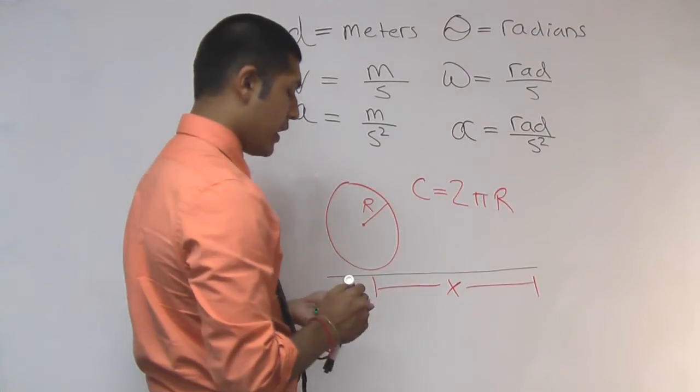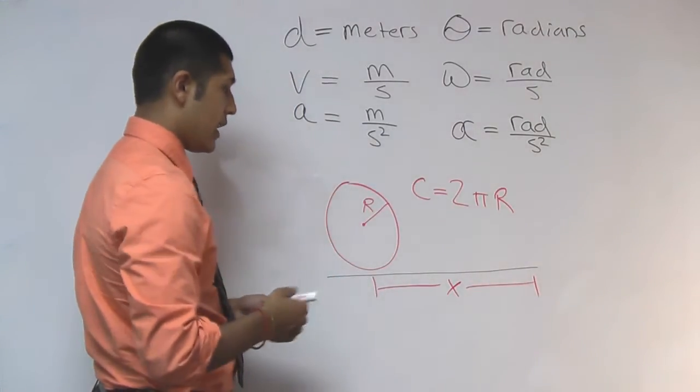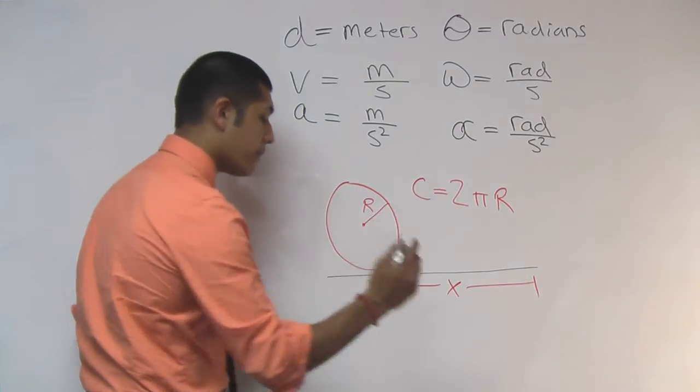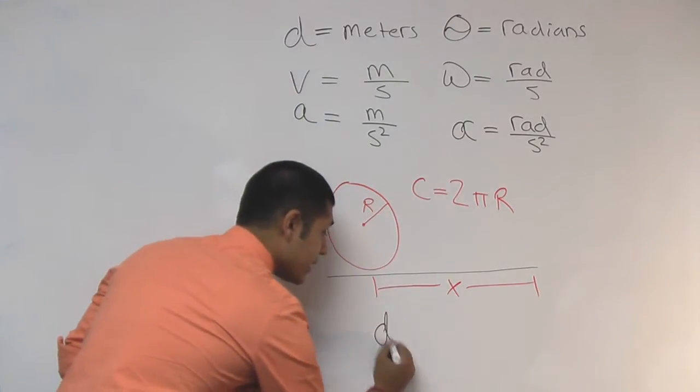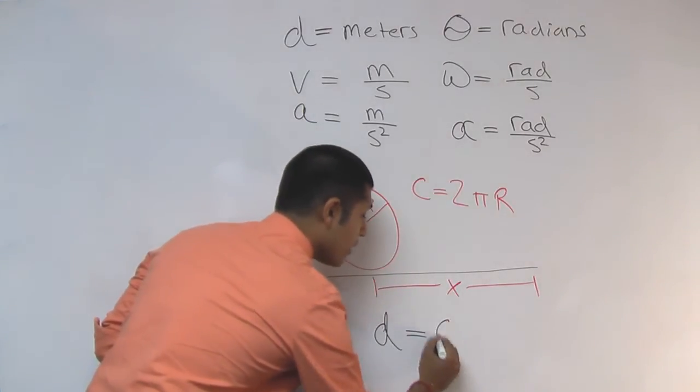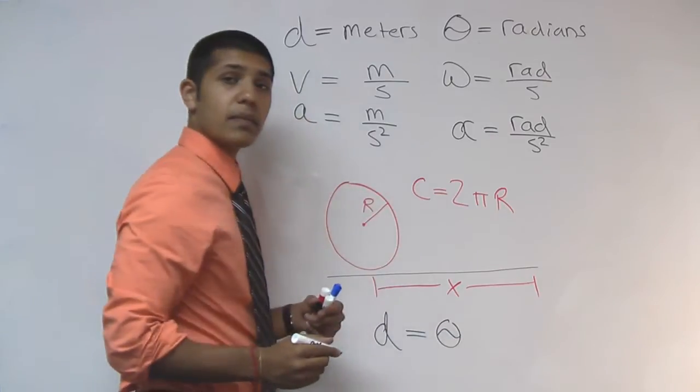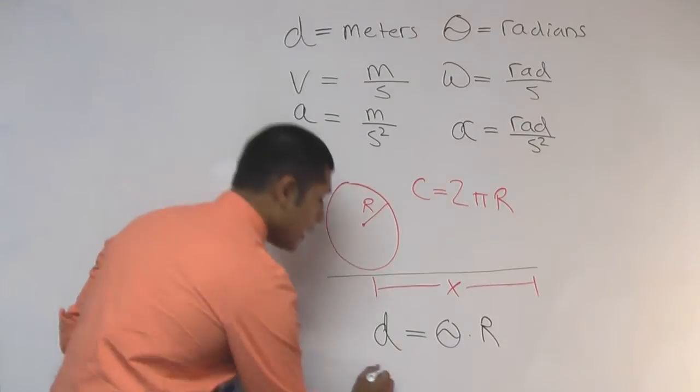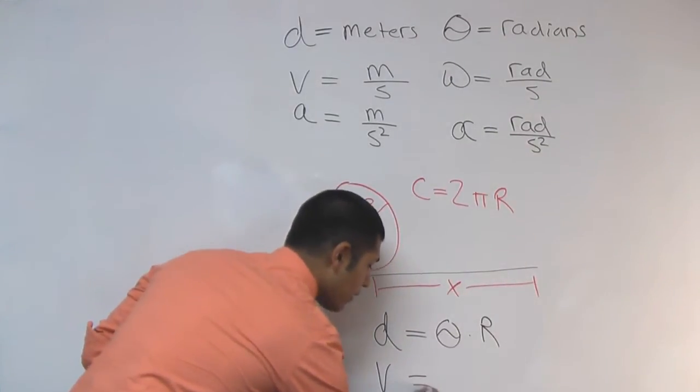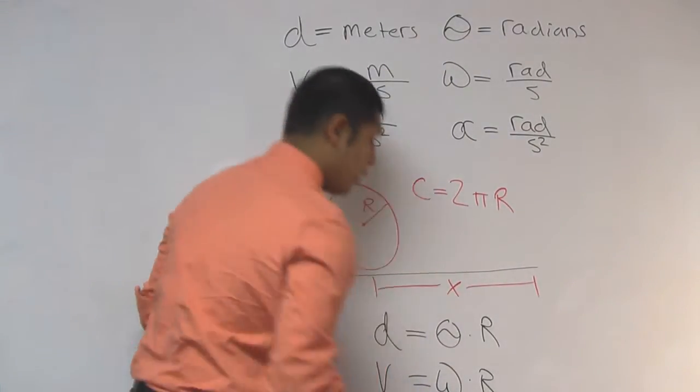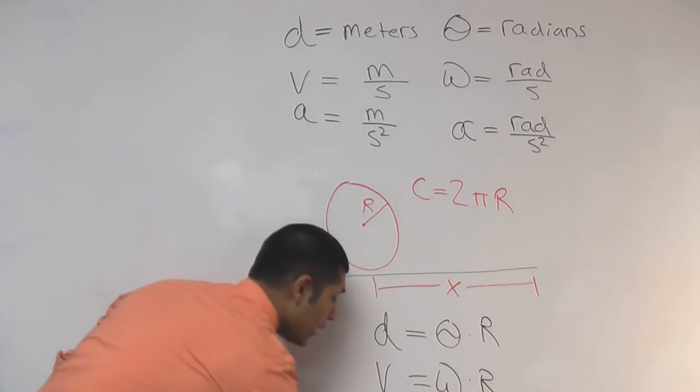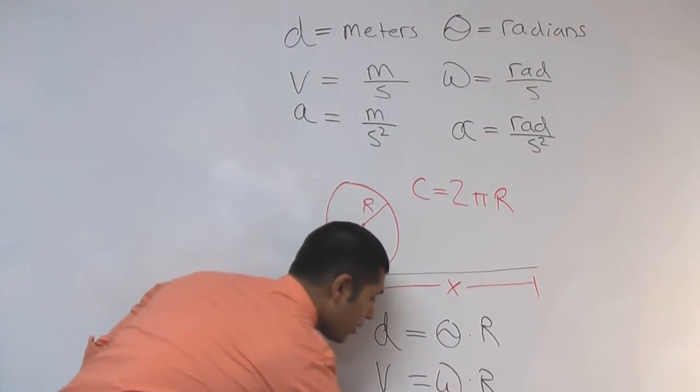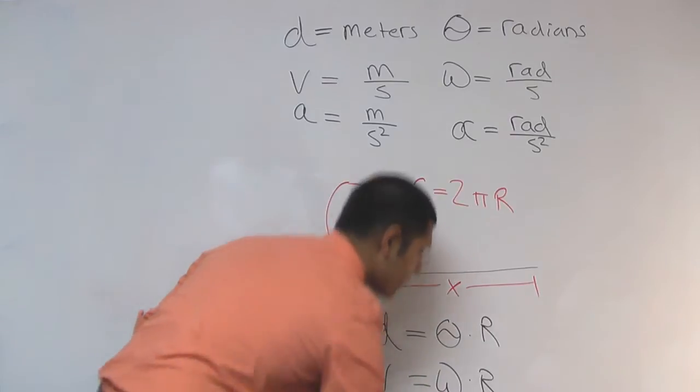So now let's take a look at the variables and set that same relationship up. Linear distance d is equal to angular displacement times r. Pretty simple. Linear velocity is equal to angular velocity times r. And our linear acceleration is equal to angular acceleration times r.